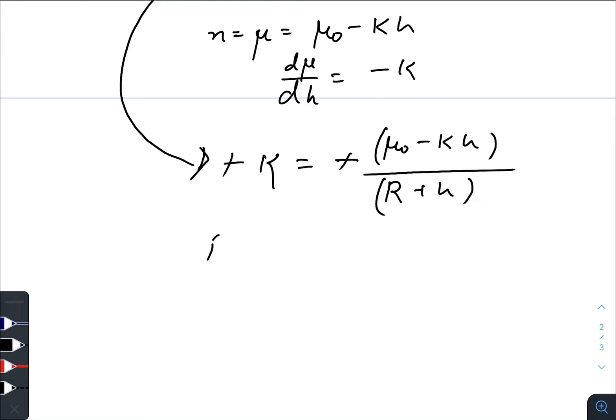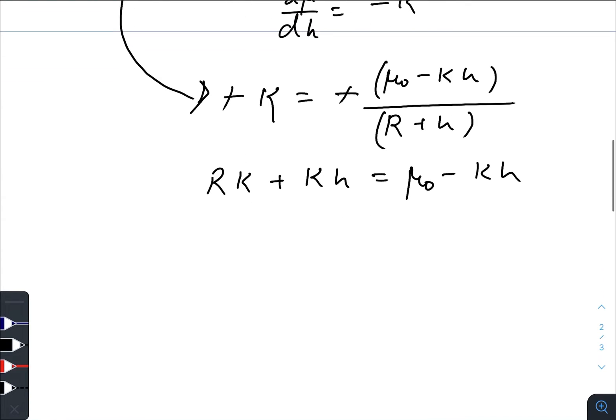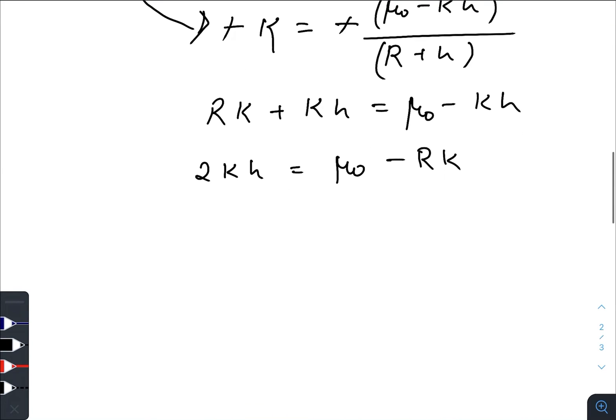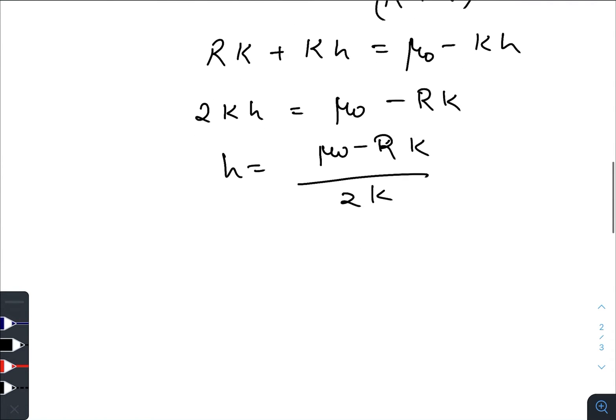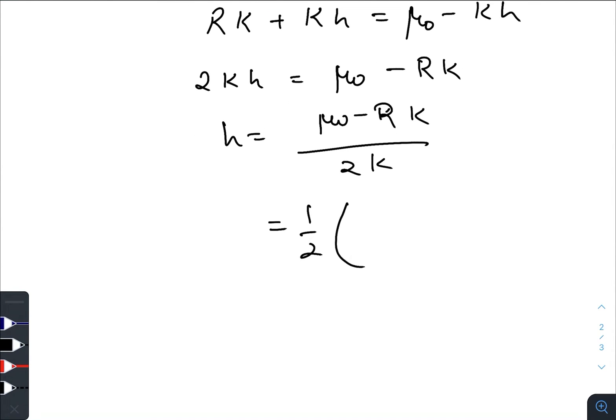Minus gets cancelled out. Rk + kh = μ₀ - kh. So 2kh = μ₀ - Rk. So we have h = (μ₀ - Rk)/(2k) = (μ₀/2k) - R/2. So this is the altitude.